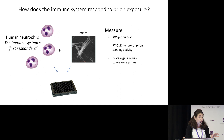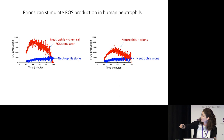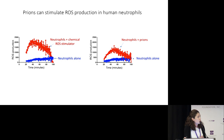So when they produce these natural disinfectants, what happens to the prions? What I found is that yes — prions in a dish with human neutrophils are able to activate the cells, and when they activate the cells, the cells produce these ROS disinfectants.